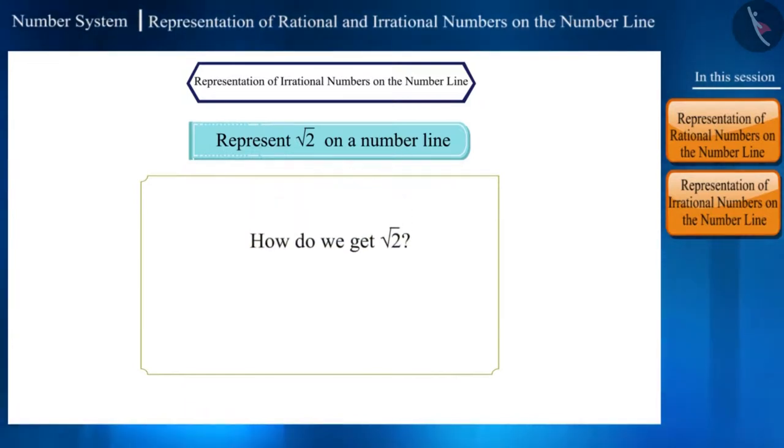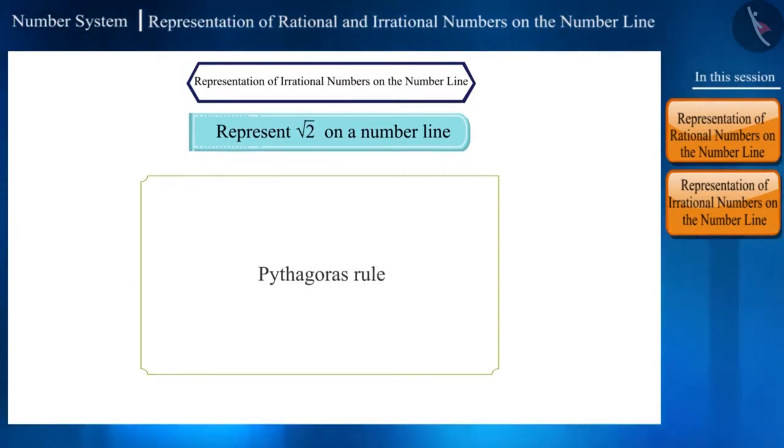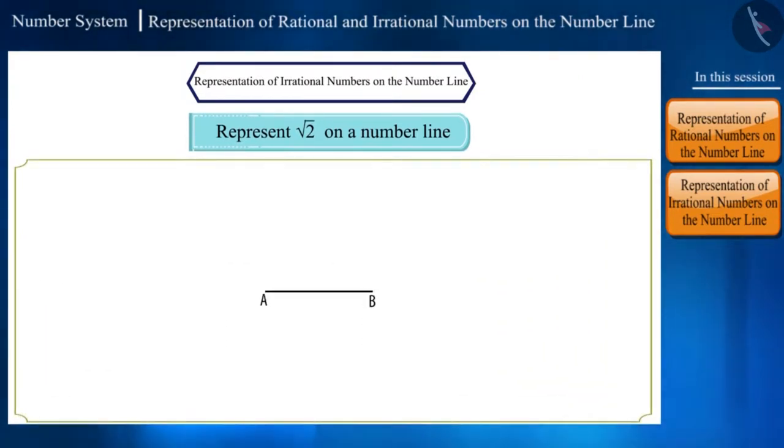Let's represent root 2 on a number line. How do we get root 2? When do we get any number in the form of roots? When any number is in the form of squares, like x square is equal to 2, then we get x as root 2. Friends, when we use words like squares, square roots, which rule comes to your mind? Yes, Pythagoras rule.